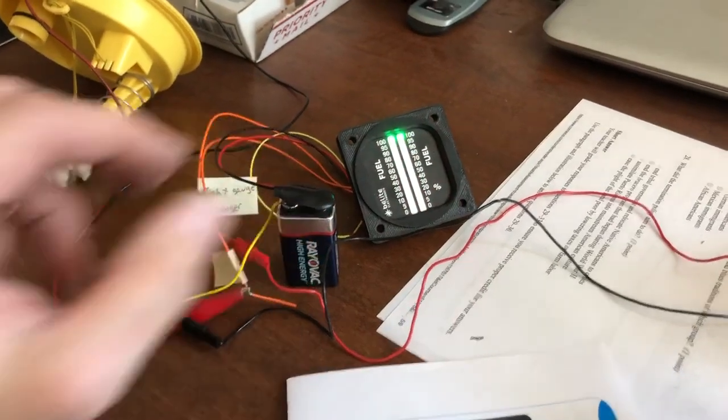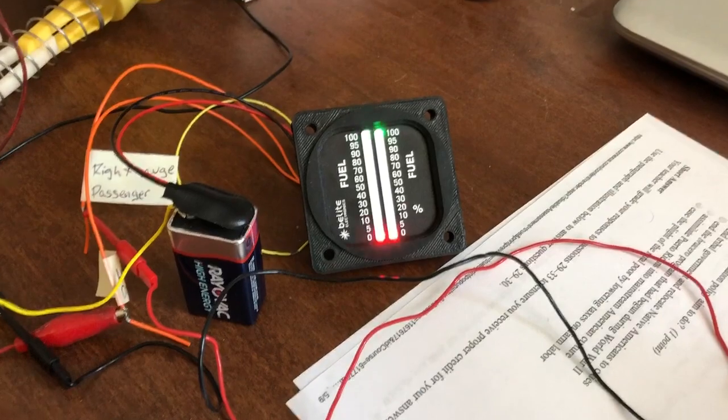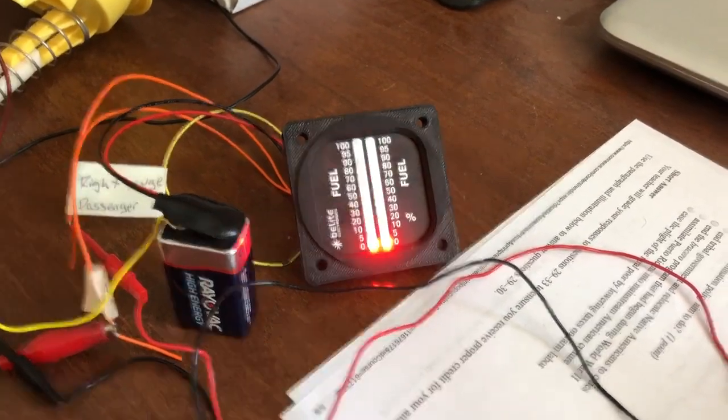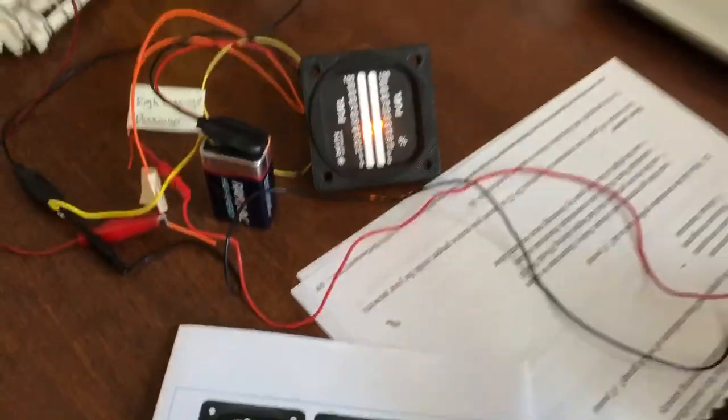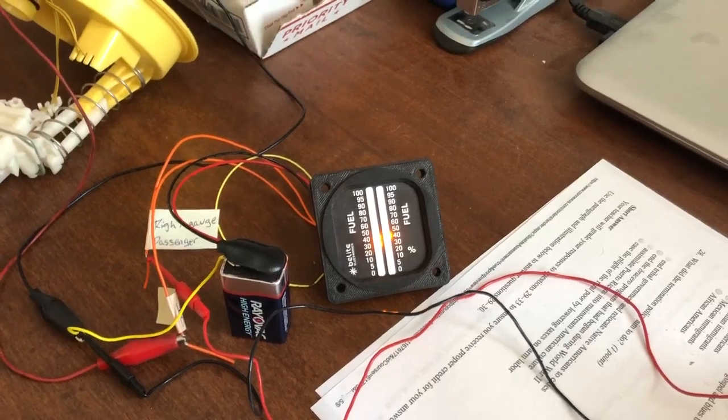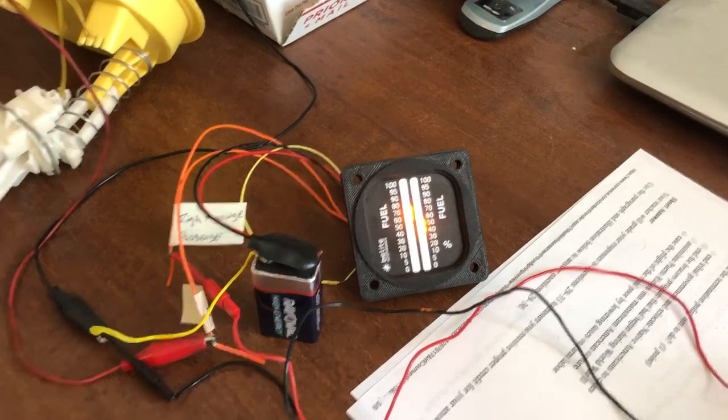So here you can see the gauge is powering up and this little sequence it goes through when it first powers up, and then it shows with LED the current fuel level for each tank or each lobe of the tank.